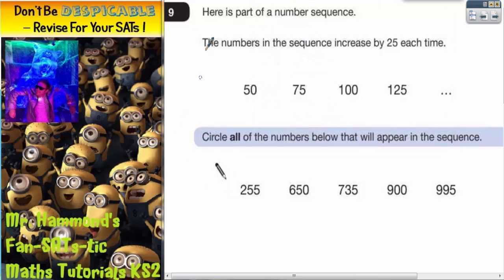Question 9 is all about sequences. It says here's part of a number sequence. The numbers in the sequence increase by 25 each time.